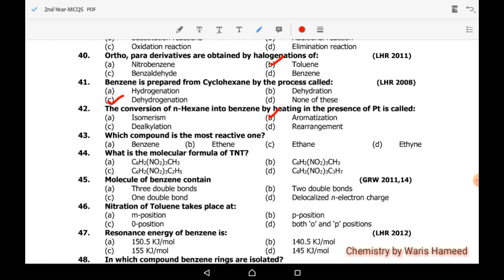Which compound is most reactive? We know that alkenes are the most reactive hydrocarbons among all others. So ethene is alkene. What is the molecular formula of TNT? TNT stands for trinitrotoluene. A and B both are correct. A is correct.